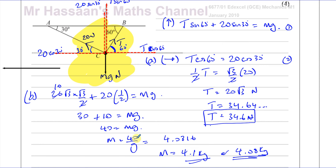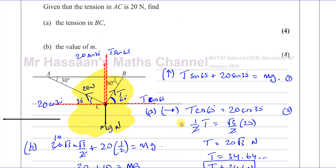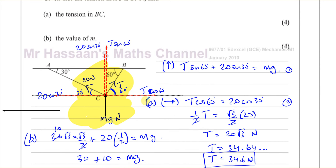So those are the answers for this question. That's resolving forces. This question is not so difficult to solve using this method — it's quite easy. But there's another method we could also use, possible only because these angles make the angle between the two tensions exactly 90 degrees.